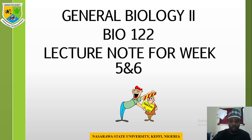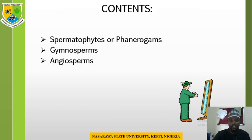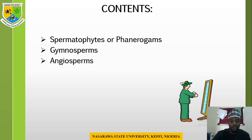This is your lecture note for week 5 and 6. Today we shall be looking at the other segment of the classification of plants based on the presence or absence of seed. Last week we said plants based on the presence or absence of seed are divided into two divisions: the cryptogamia and the phanerogamia or spermatophyte. The cryptogamias are divided into three divisions: thalophyta, bryophyta, and pteridophyta.